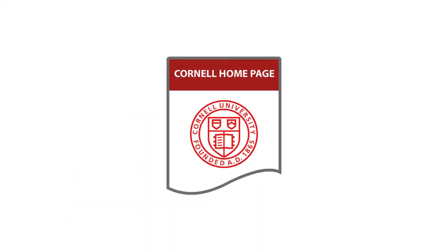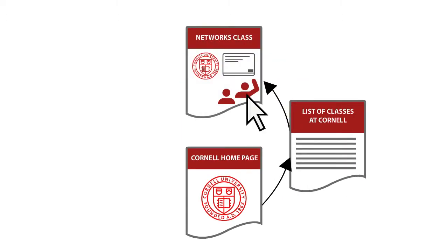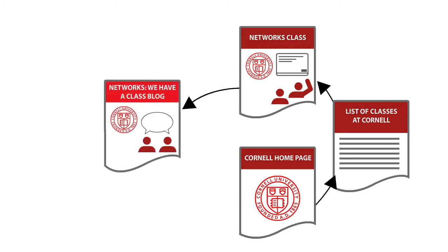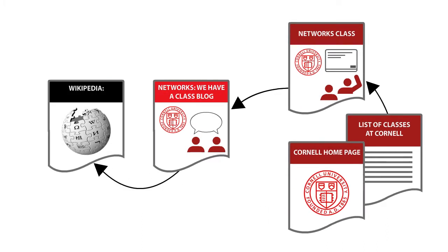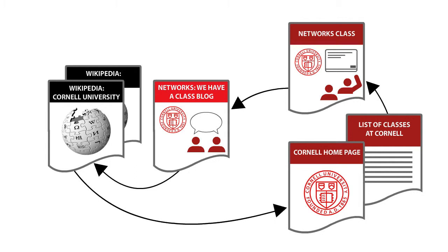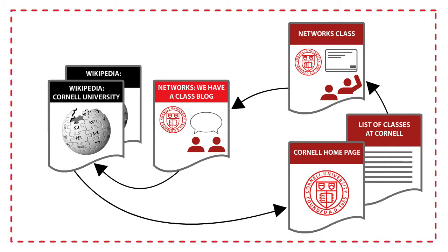Remember that when you look at strongly connected components, you can start with a node and ask what are all the things that it can reach and that can reach it. From Cornell's home page, I can click through to the list of classes, to the networks class, to the class blog. There I find a blog post that links to an article about Wikipedia. Once I'm in Wikipedia, I start navigating around, get to the article about Cornell, and I'm back at Cornell's home page. So they're all in the same strongly connected component.